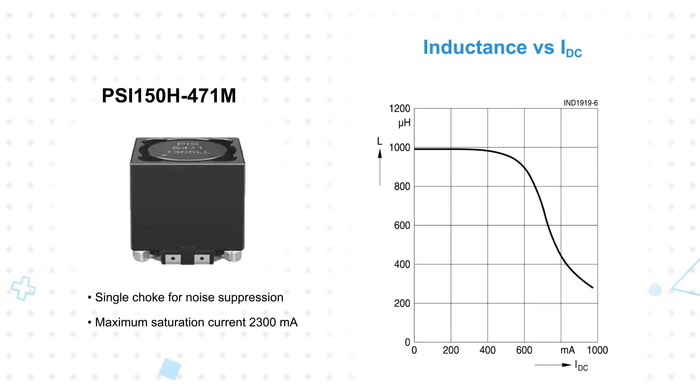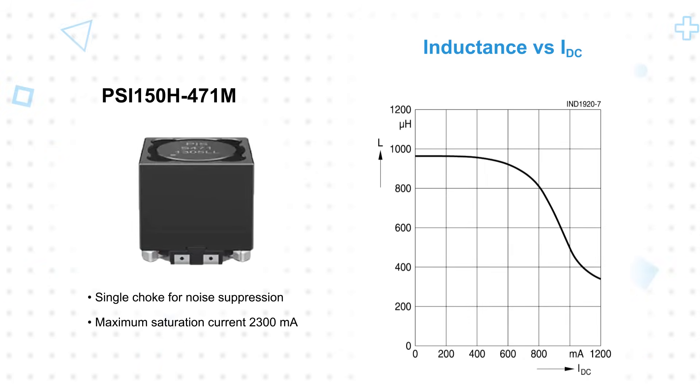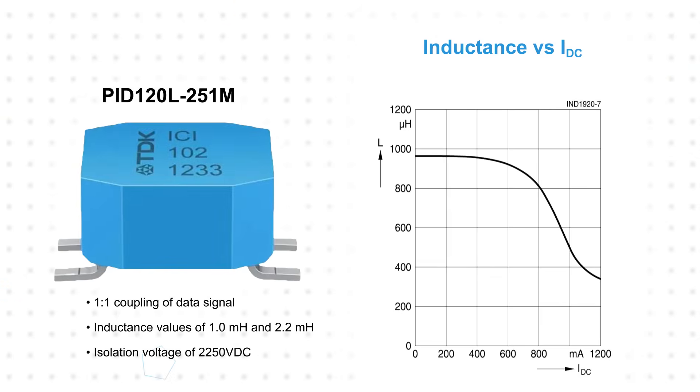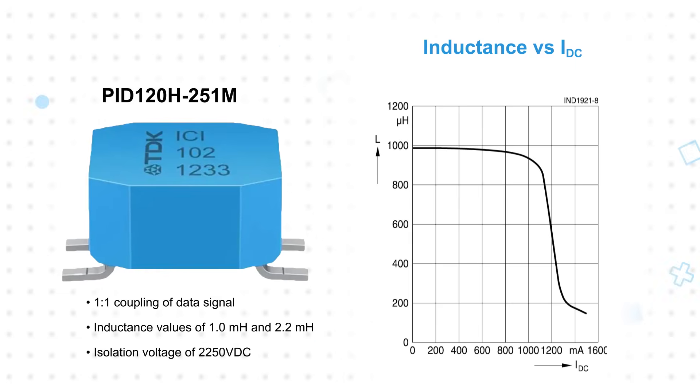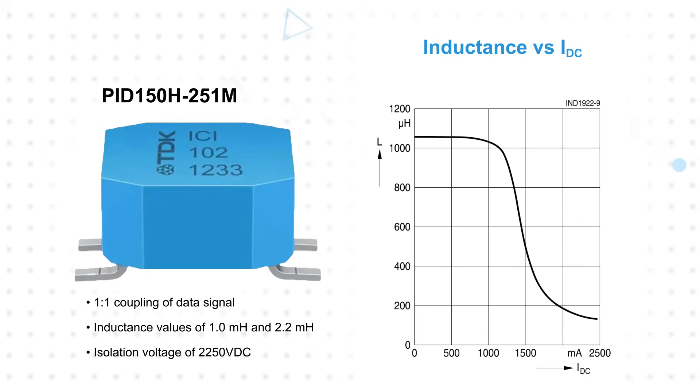The PIS150H-471M inductor is designed as a single choke for noise suppression and smoothing of currents with a maximum saturation current of 2300mA. The ICI70CGI isolation inductors are one-to-one transformers that provide galvanic isolation between the PHY and the connector. They are available with 1.0 and 2.2 mH inductance values and provide 2250V DC of isolation.